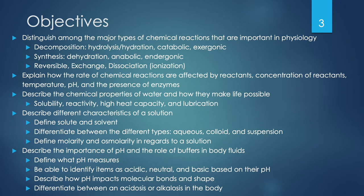You'll be able to distinguish among the major types of chemical reactions important in physiology. This includes decomposition — including hydrolysis and hydration reactions, catabolic and exergonic — synthesis reactions including dehydration, anabolic and endergonic, and reversible exchange and dissociation reactions including ionization. You'll also be able to explain how the rate of chemical reactions is affected by reactant concentration, temperature, pH, and the presence of enzymes.